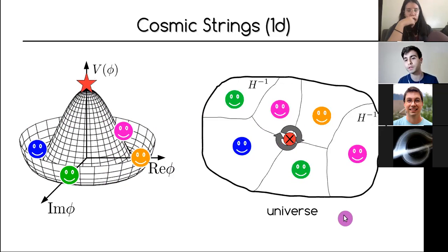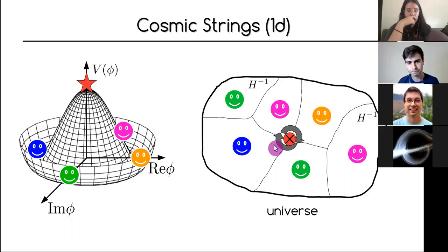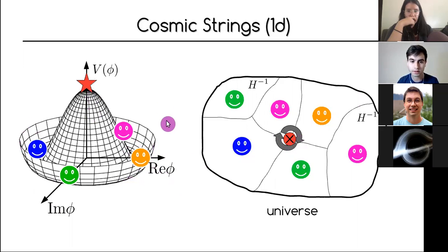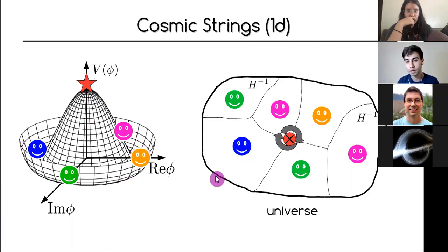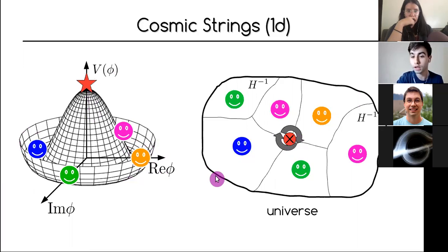Instead of having a slice, if you stack different slices you get an infinite string. The fact that we are going once around the minima is what we call the winding number — going once in one direction gives winding number plus one, and in the opposite direction minus one. This corresponds to a string going into or out of the screen.